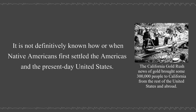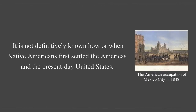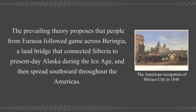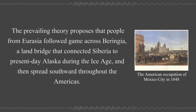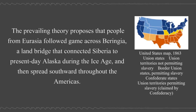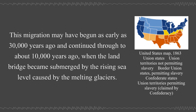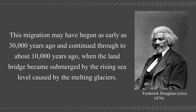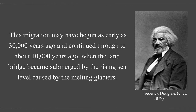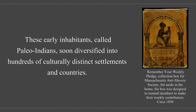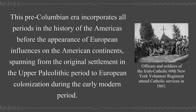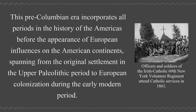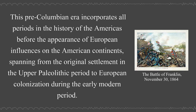It is not definitively known how or when Native Americans first settled the Americas. The prevailing theory proposes that people from Eurasia followed game across Beringia, a land bridge that connected Siberia to present-day Alaska during the Ice Age, and then spread southward throughout the Americas. This migration may have begun as early as 30,000 years ago and continued through to about 10,000 years ago when the land bridge became submerged by rising sea levels caused by melting glaciers. These early inhabitants, called Paleo-Indians, soon diversified into hundreds of culturally distinct settlements and nations. This pre-Columbian era incorporates all periods in the history of the Americas before the appearance of European influences, spanning from the original settlement in the Upper Paleolithic period to European colonization during the early modern period.